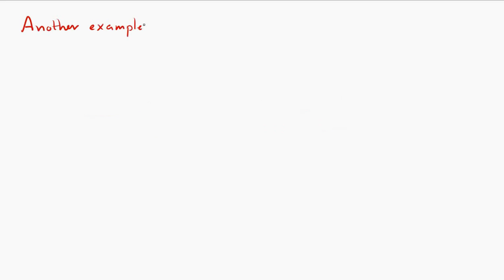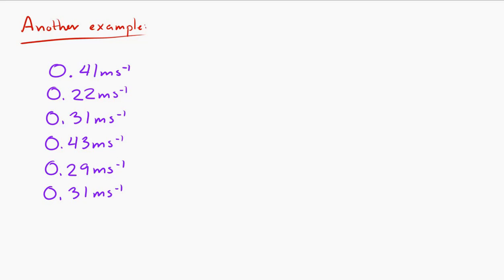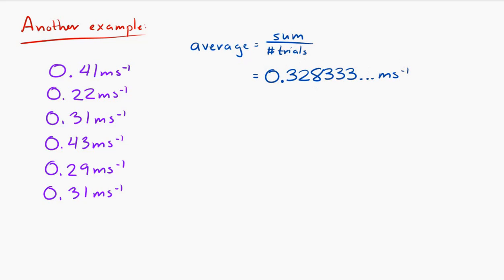So let's look at one more example. Let's say our data set is another set of velocity measurements: 0.41, 0.22, 0.31, 0.43, 0.29, and 0.31 meters per second. If we calculate the average — do the sum divided by six — you get 0.3283 repeating meters per second. And the uncertainty is the max minus the min over two, which gives an uncertainty of 0.105 meters per second.